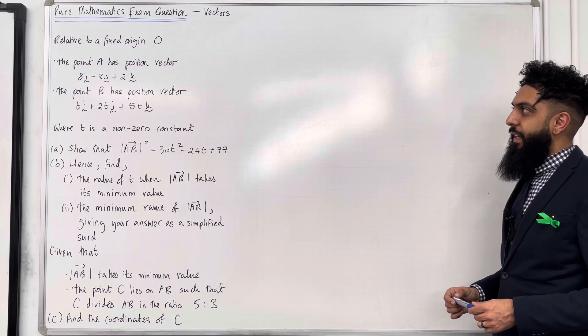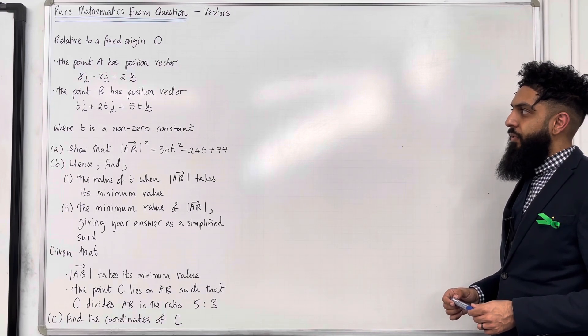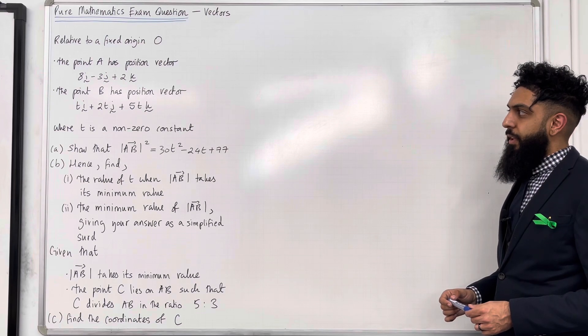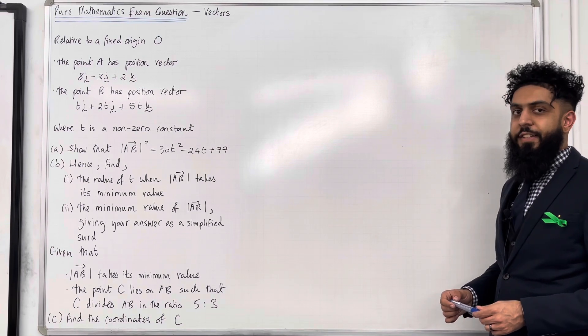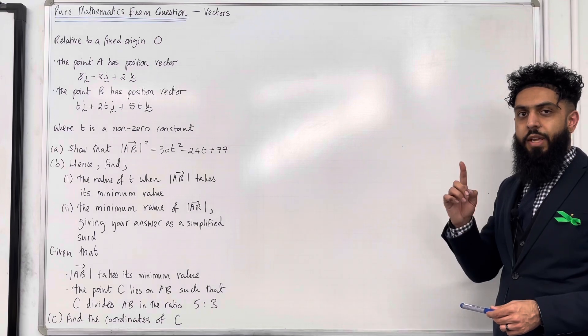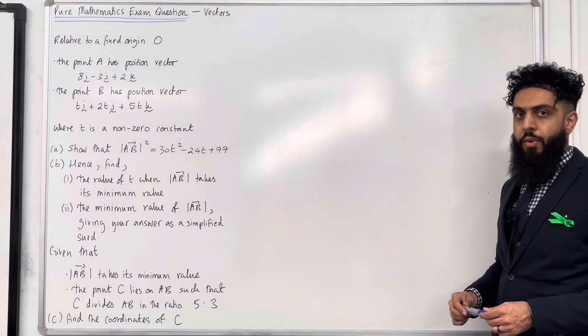Relative to a fixed origin O, the point A has position vector 8i minus 3j plus 2k. The point B has position vector Ti plus 2tj plus 5tk, where t is a non-zero constant.